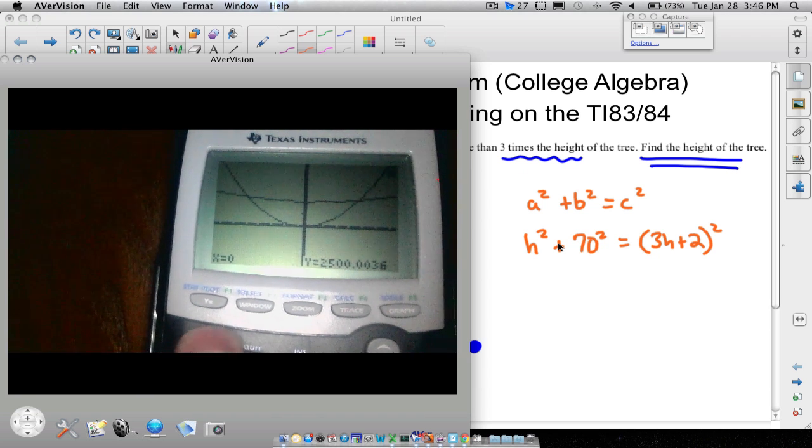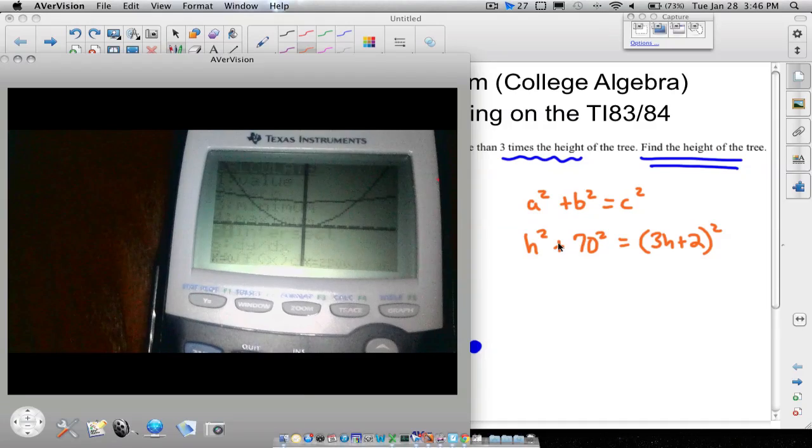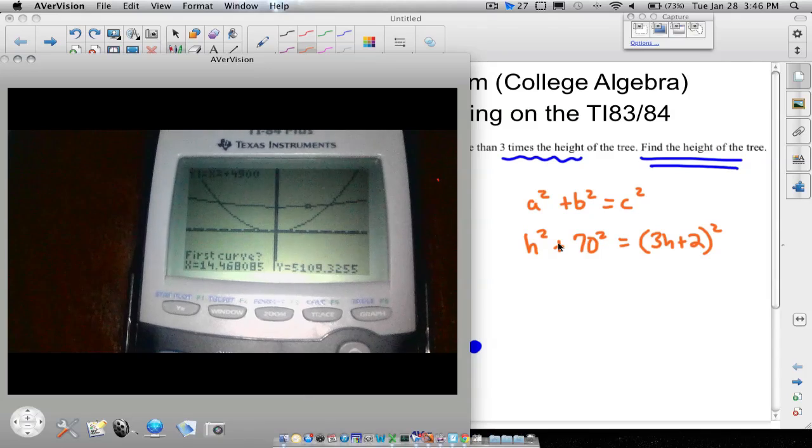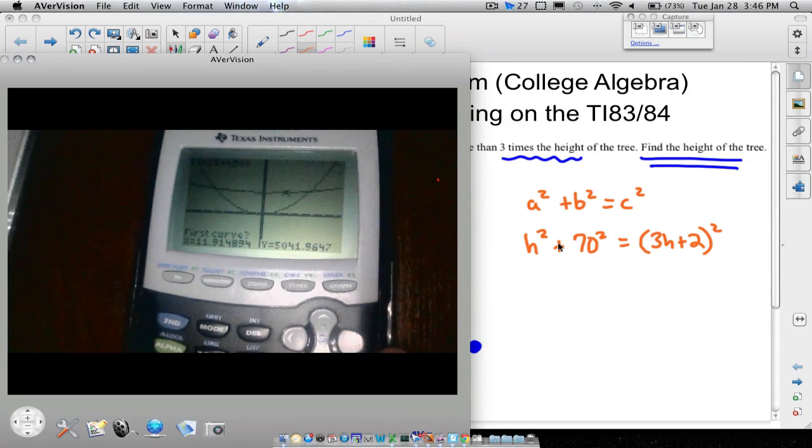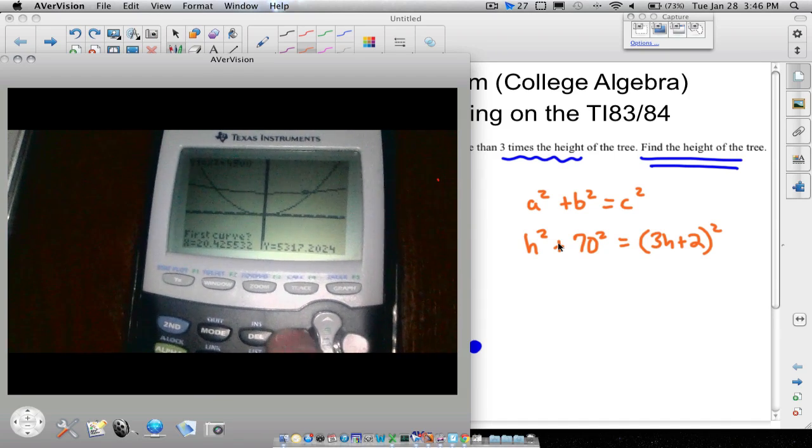So what we can do now is we can go to second, we can press trace, and we want to find where our graphs intersect. So I'm going to press enter on that. And I'm just going to scroll over here a little bit. I've mentioned this in previous videos. Using left and right arrows on the calculator will move the dot along that curve.